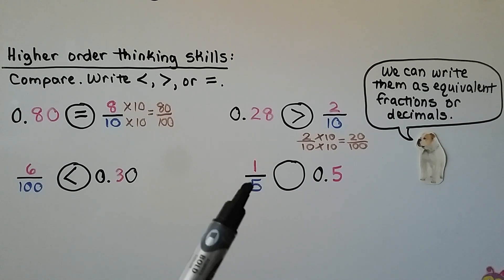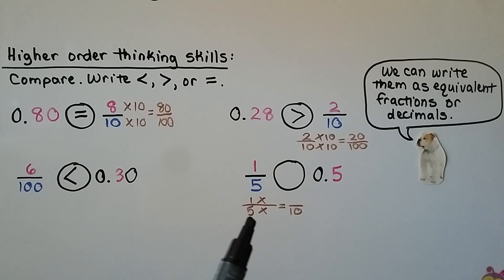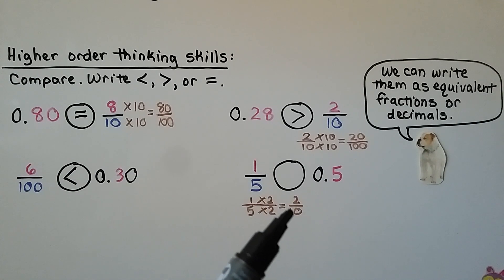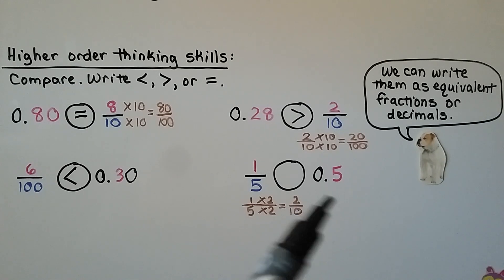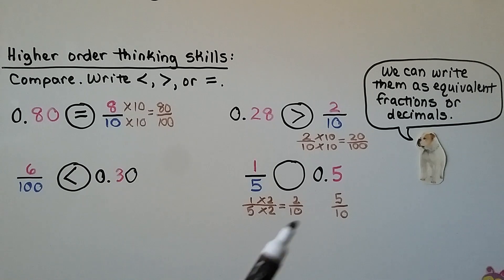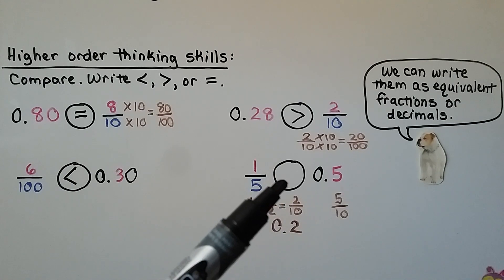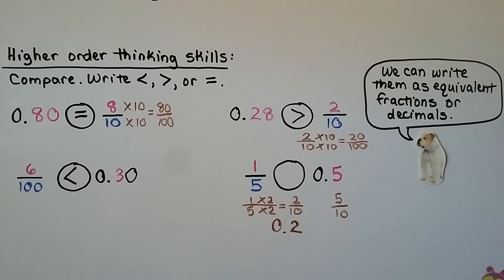Here we have one-fifth and five tenths. We can use scratch paper to give one-fifth a denominator of tenths: five times two equals ten, so we multiply the numerator by two — one-fifth equals two tenths. Writing five tenths as a fraction and two tenths as a decimal, we can easily see that two tenths is less than five tenths. By writing them as equivalent fractions or decimals, we can easily compare and put the correct sign.